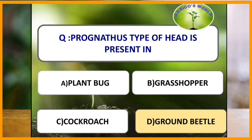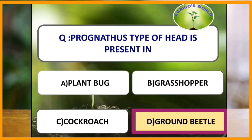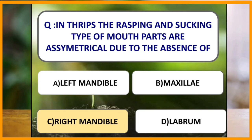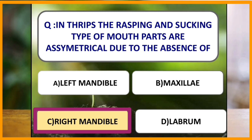Prognathous type of head is present in which of the following? Prognathous type of head is present in ground beetle. In prognathous type of head, the head remains in the same axis as the body and mouthparts are projected forward. This type of prognathous head is mostly found in coleopteroid type of insects. In thrips, the rasping and sucking type of mouthparts are asymmetrical due to the absence of the right mandible.